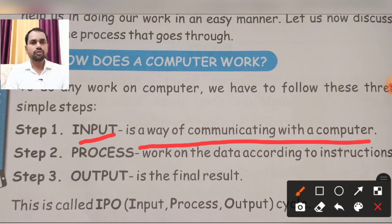Communication is a medium in which we are going to talk with the help of the internet. Without internet connectivity, I will not be able to communicate with you. The second step is process. Process is a way to work on the data according to the instructions.